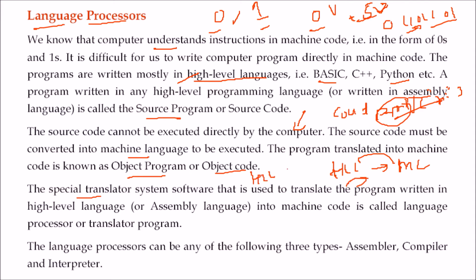Assembly language is English-like but closer to the processor. For example, 'ADD A, B' — here A is the accumulator, B is some value in a register, and when addition is done the result is placed back in the accumulator. These special programs that convert high-level language or assembly language into machine language are called language processors or translator programs.